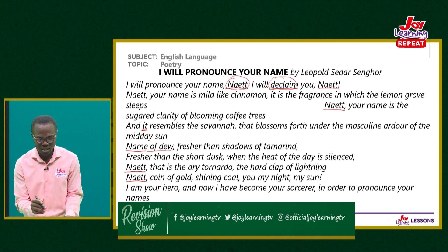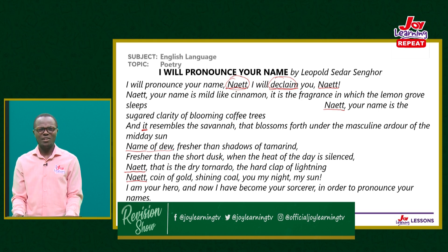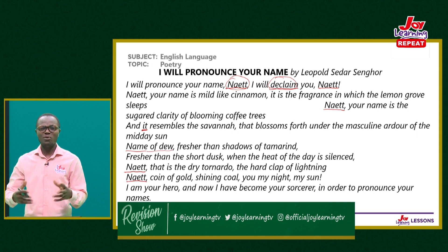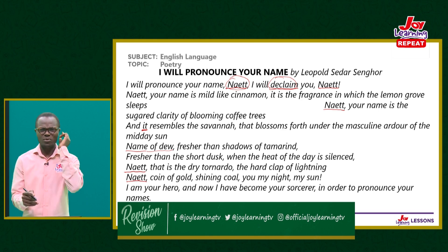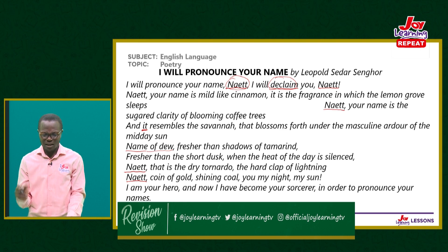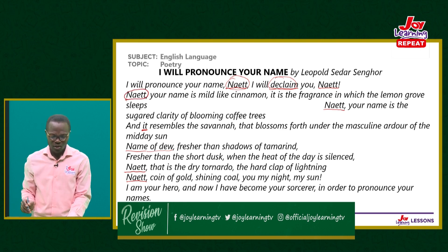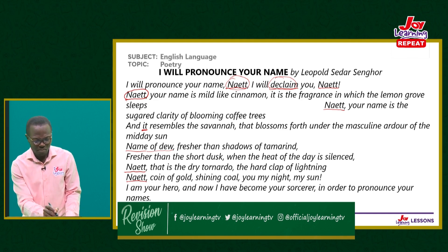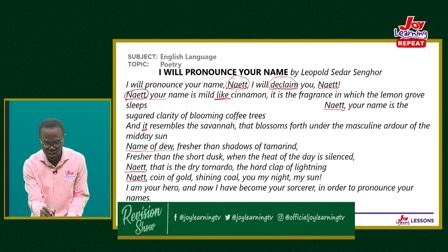Senghor was part of the Negritude movement, interested in glorifying Africa and the African. Everything he does is about Africa, but he presents it through the character of Nayet, like a woman. When he says 'I will pronounce your name,' he's ready to let people know this woman — then 'I will declaim you.' He's comparing the name using 'like' — that's a simile.